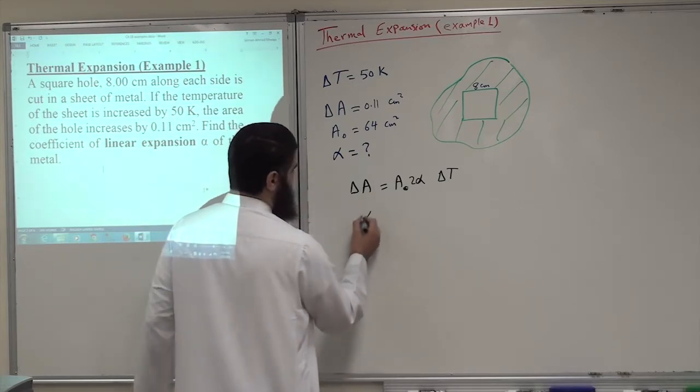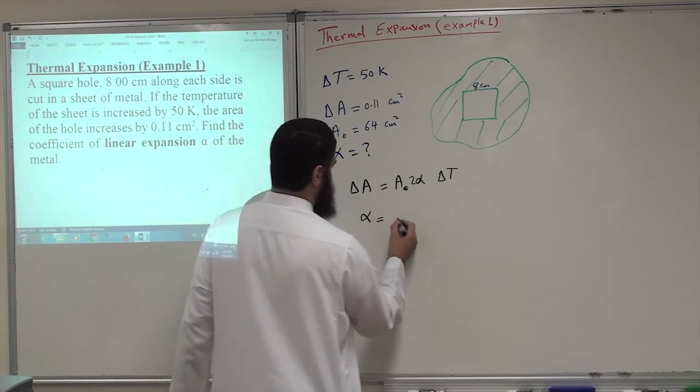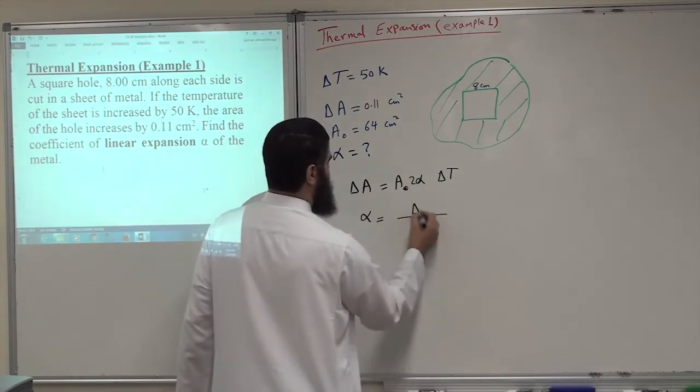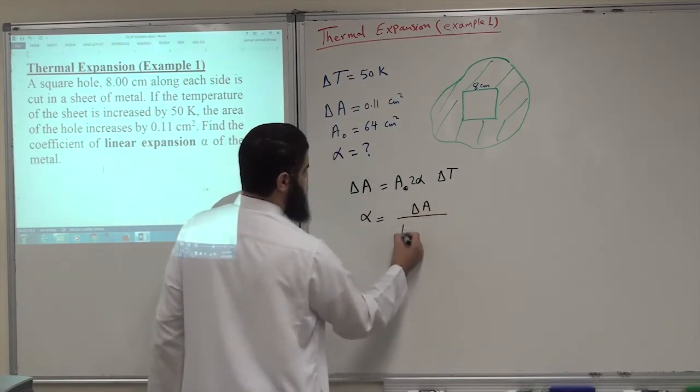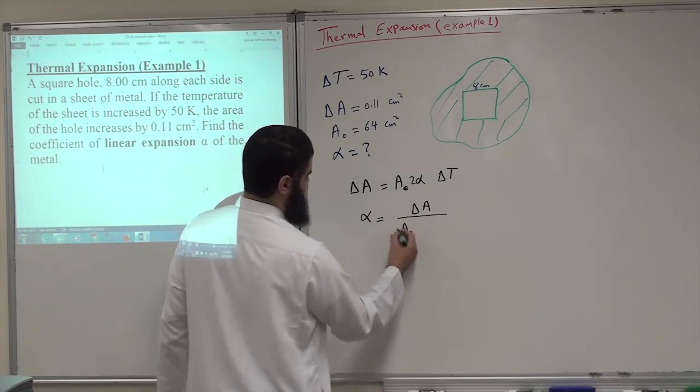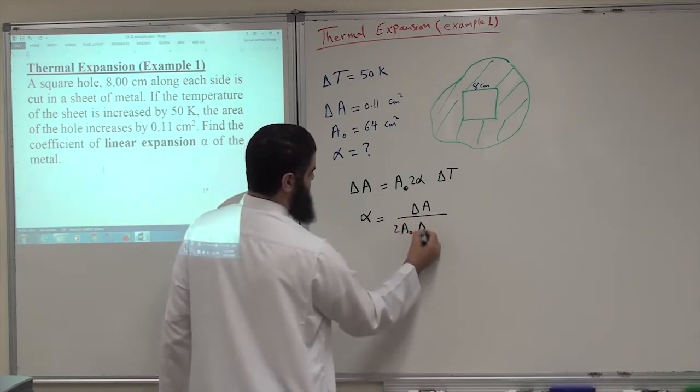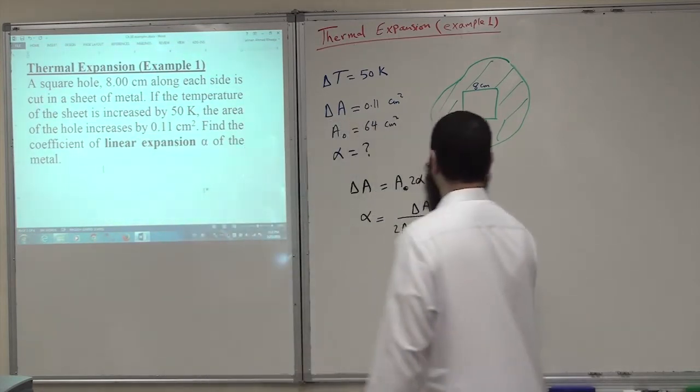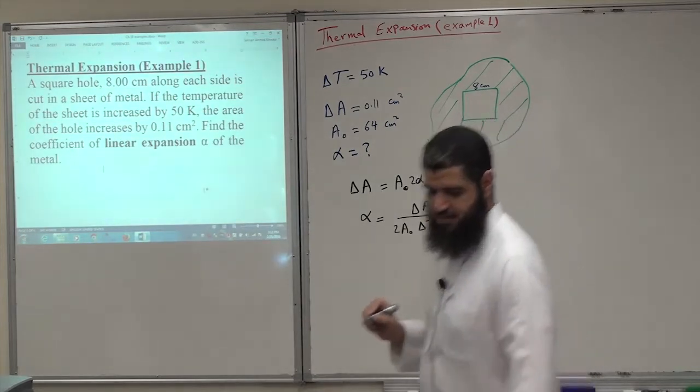So delta A is given and we can find that alpha equals delta A divided by A0, and we have 2, and also we have delta T. So just plugging the numbers.